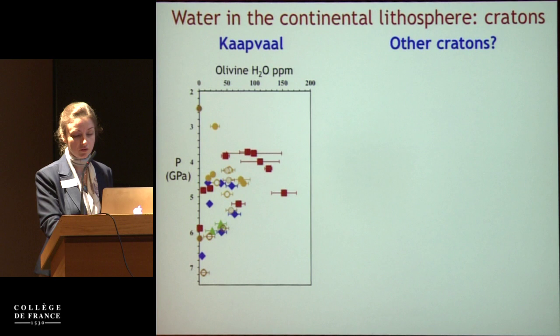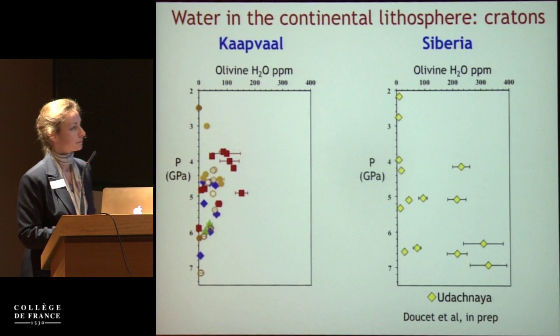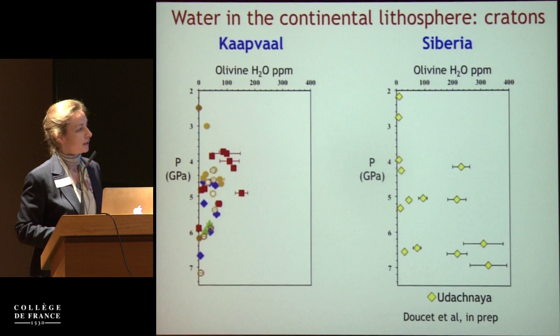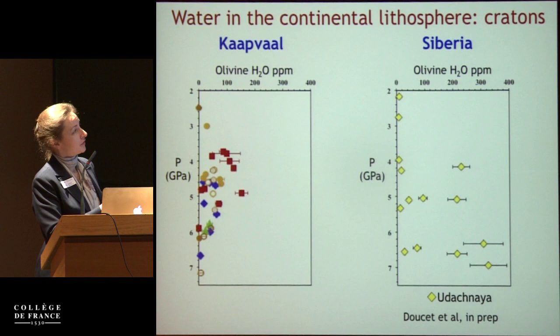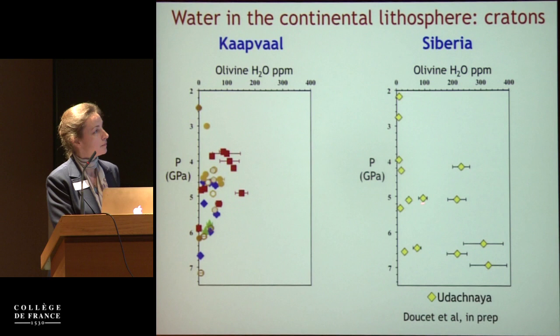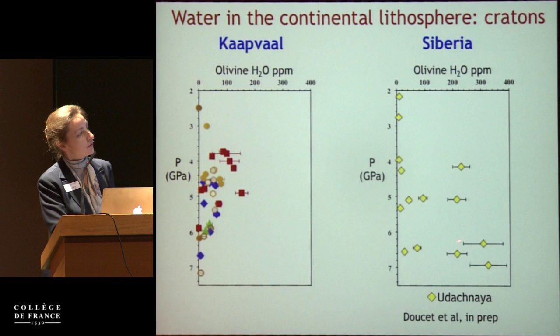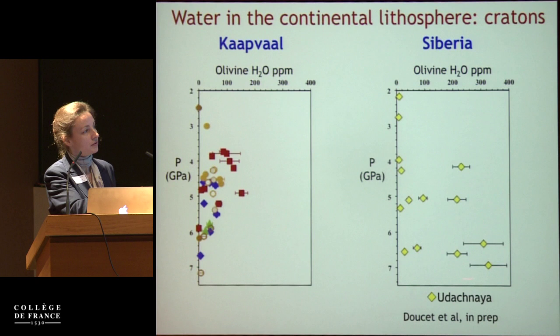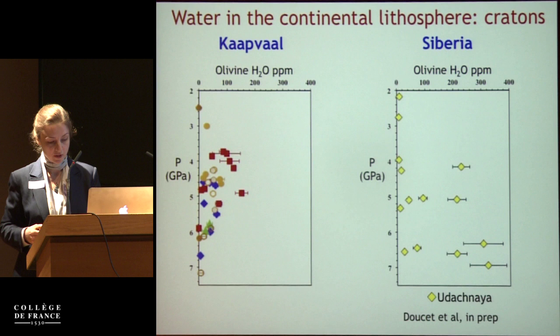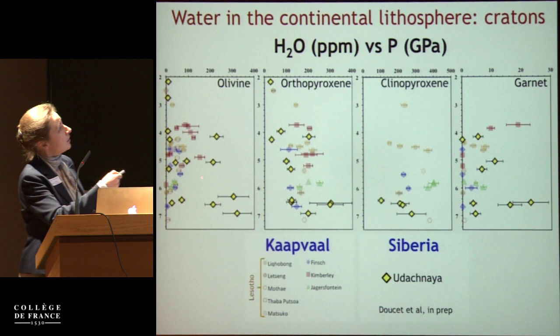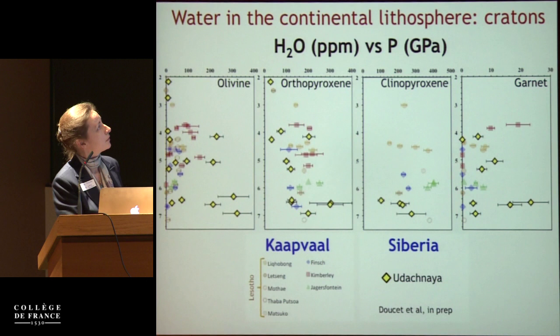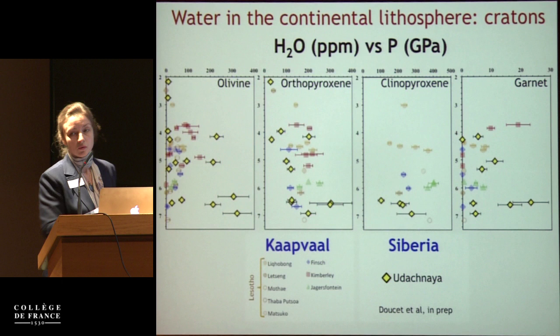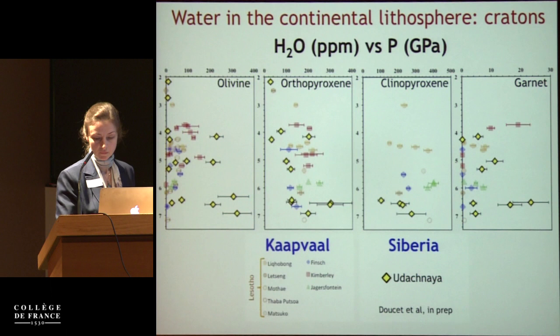The next question was: is this visible in all cratons? So we analyzed xenoliths from the Siberian craton — work done by Luc Doucet, now at the University of Brussels. The water content versus pressure profile in Siberia is very different from Kaapvaal. Siberian olivines can be very wet, more than 300 ppm water, and some of the most water-rich olivines are found at the deepest levels we have access to. Even the pyroxenes and garnets show the most water-rich compositions at the deepest levels — the opposite of Kaapvaal.